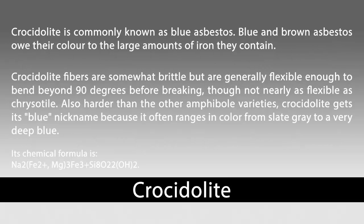Crocidolite is commonly known as blue asbestos. Blue and brown asbestos owe their color to the large amounts of iron they contain. Crocidolite fibers are somewhat brittle but are generally flexible enough to bend beyond 90 degrees before breaking, though not nearly as flexible as chrysotile. Also harder than the other amphibole varieties, crocidolite gets its blue nickname because it often ranges in color from slate gray to a very deep blue.